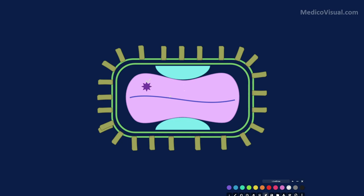This DNA is covered from outside by the nucleocapsid core — the capsid core along with the DNA is called the nucleocapsid core. Then we have the lateral bodies. Outside is a double-layered envelope: the inner envelope and the outer envelope. The proteins on the inner envelope are slightly different from the proteins on the outer envelope.